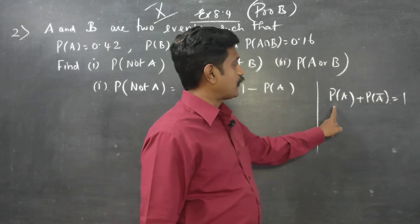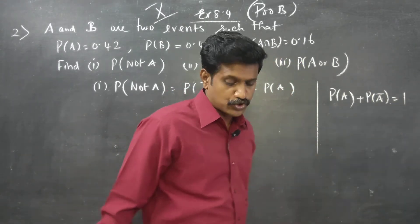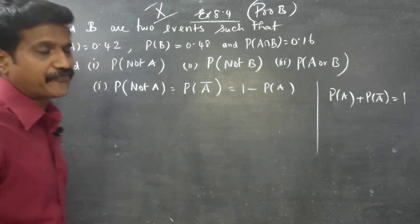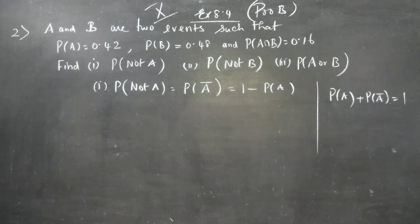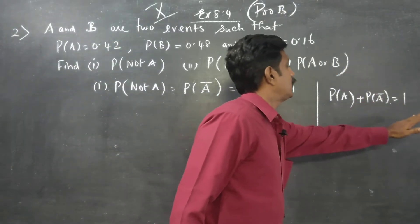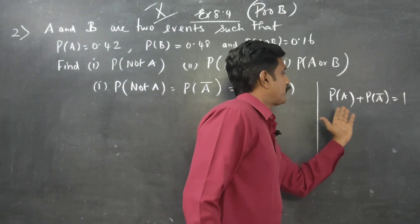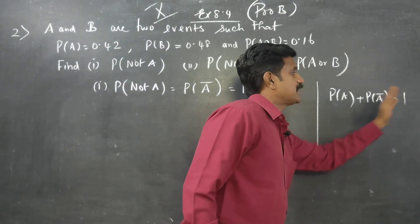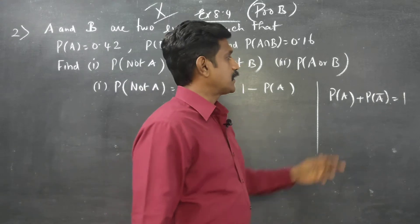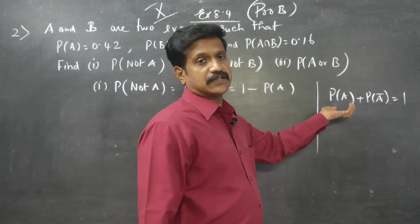This is the main formula we are going to use: P(A) plus P(A dash) is equal to 1. Therefore, P(A dash) is equal to 1 minus P(A).